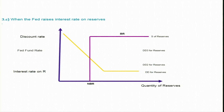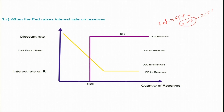Let us continue this discussion. The remaining part from the previous session is: what if the Fed changes the interest rate on reserves? When the Fed announces the FFR, they announce a target rate with a lower limit and an upper limit — for example, 2.25% is the lower limit and 2.5% is the upper limit. The Fed uses the interest rate on reserves to ensure the Fed fund rate never goes below this lower limit of 2.25%.